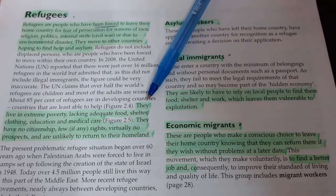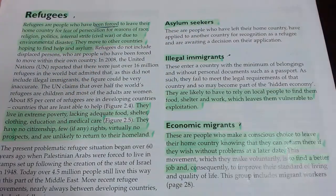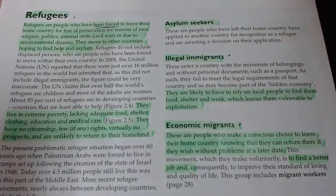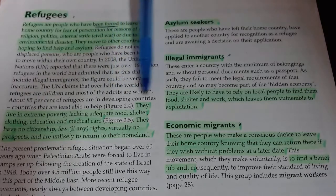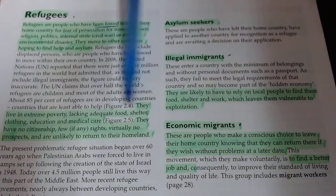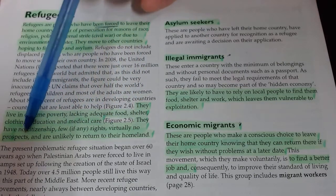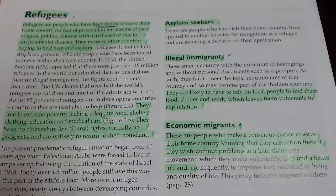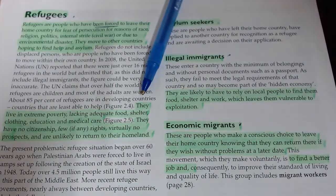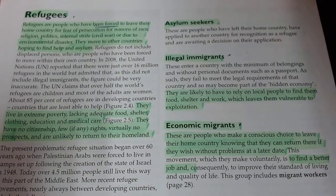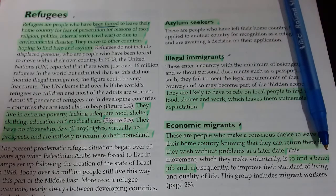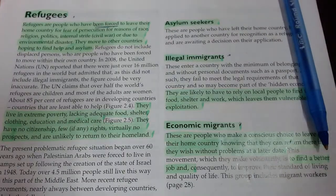When refugees get to these new countries, they have to wait for the country to make a decision about whether or not to grant them a place to live and work. Whilst they're waiting, they live in extreme poverty, lacking adequate food, shelter, clothing, education, and medical care. They have no citizenship, few rights, virtually no prospects, and are likely to want to return to their homeland. A very obvious current example is the wars in the Middle East — many Syrians have moved to places like Turkey but can't just come in straight away and work. Whilst in that decision-making process, refugees are often left in refugee camps, which is not very pleasant.